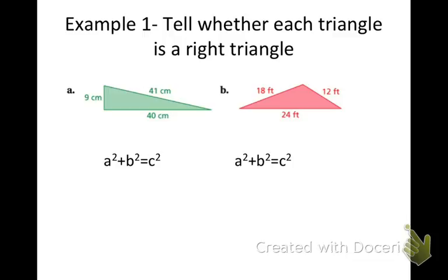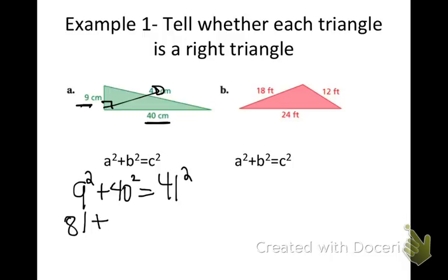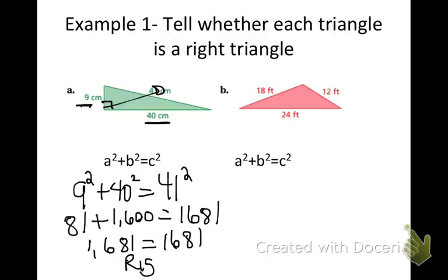So in our first example, example A, we know that this is our right triangle, so we know that's a leg, and that's a leg, so we know that 9 squared plus 40 squared, we're going to see if that equals our hypotenuse c, which is 41 squared. So 9 squared is 81, 40 squared is 1,600, and 41 squared is 1,681. We're going to see if these two are equal, and yes, they are. Therefore, this is a right triangle.